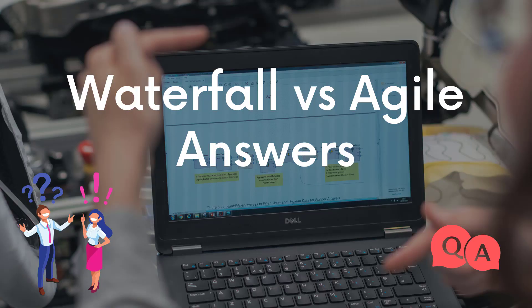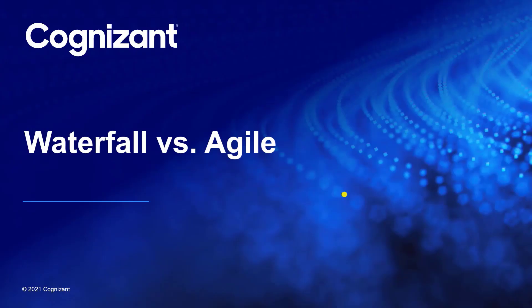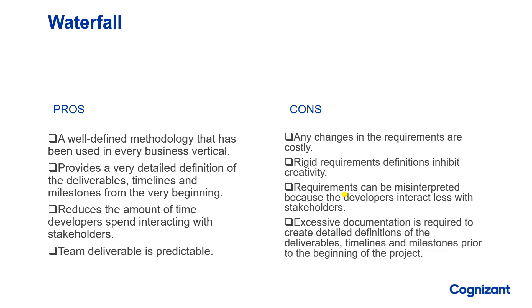The first task was Waterfall versus Agile. Here are the differences that you have to list out in this particular task regarding waterfall and agile models. I have listed some of them and you can also add on if you have any, edit your document, and share that accordingly and upload the same on the Cognizant website.